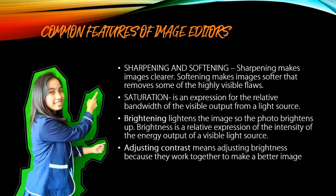Sharpening and softening: sharpening makes images clearer, while softening makes images softer and removes some of the highly visible flaws. Saturation: an expression for the relative bandwidth of the visible output from a light source. Brightening: lightens the image so the photo brightens up. Adjusting contrast means adjusting brightness because they work together to make a better image.